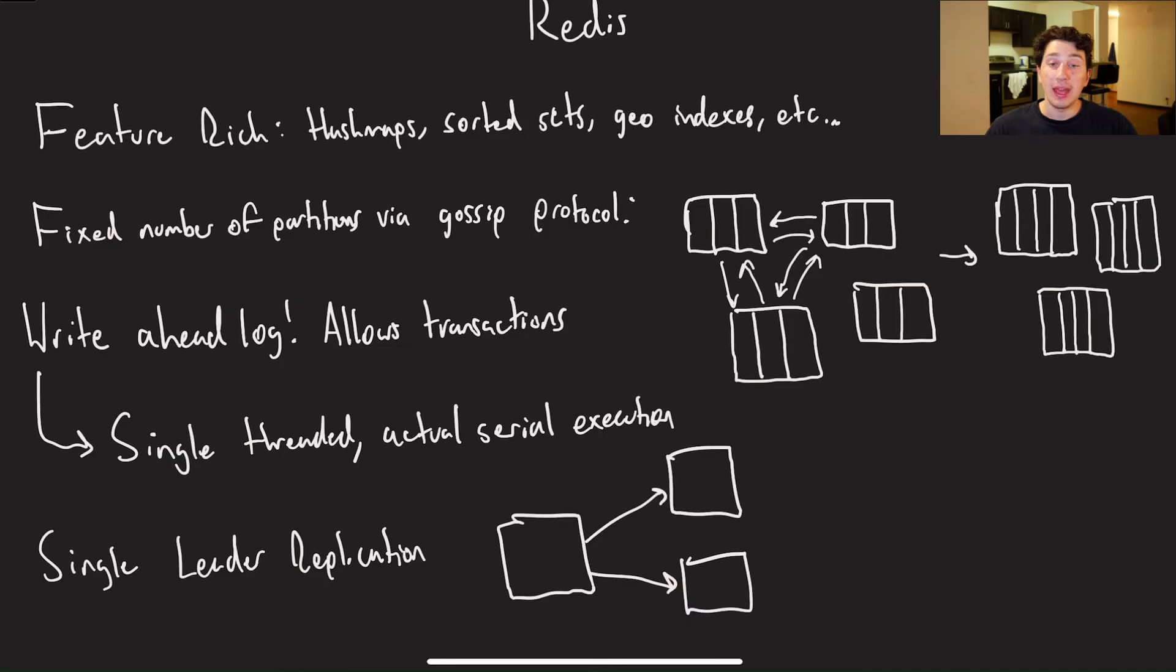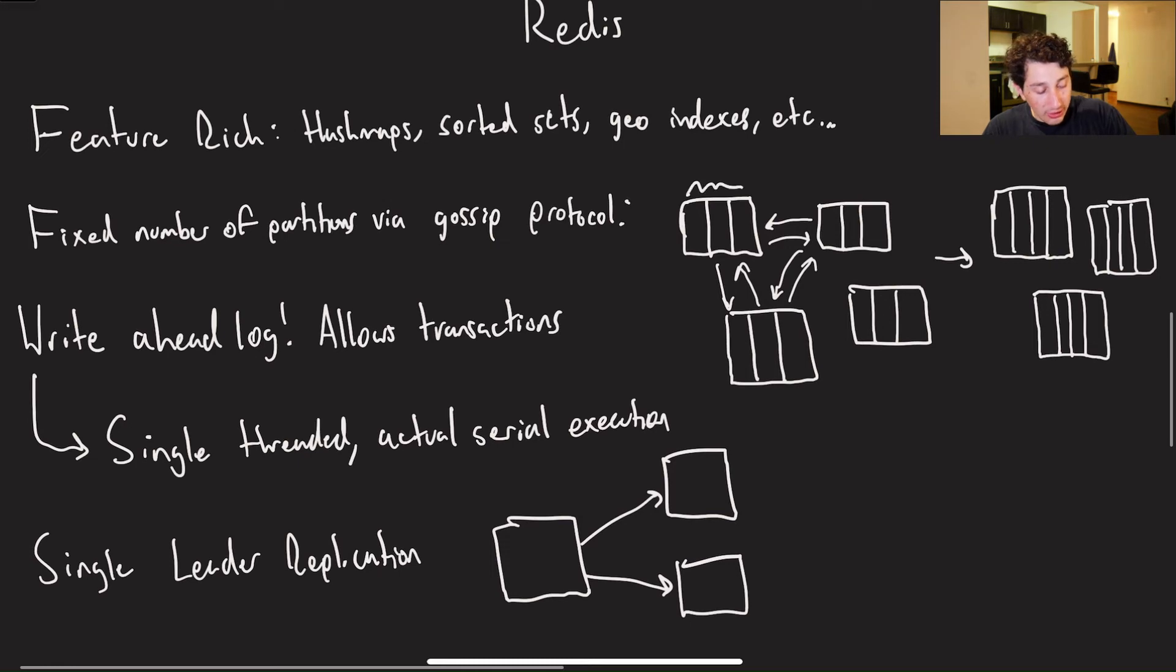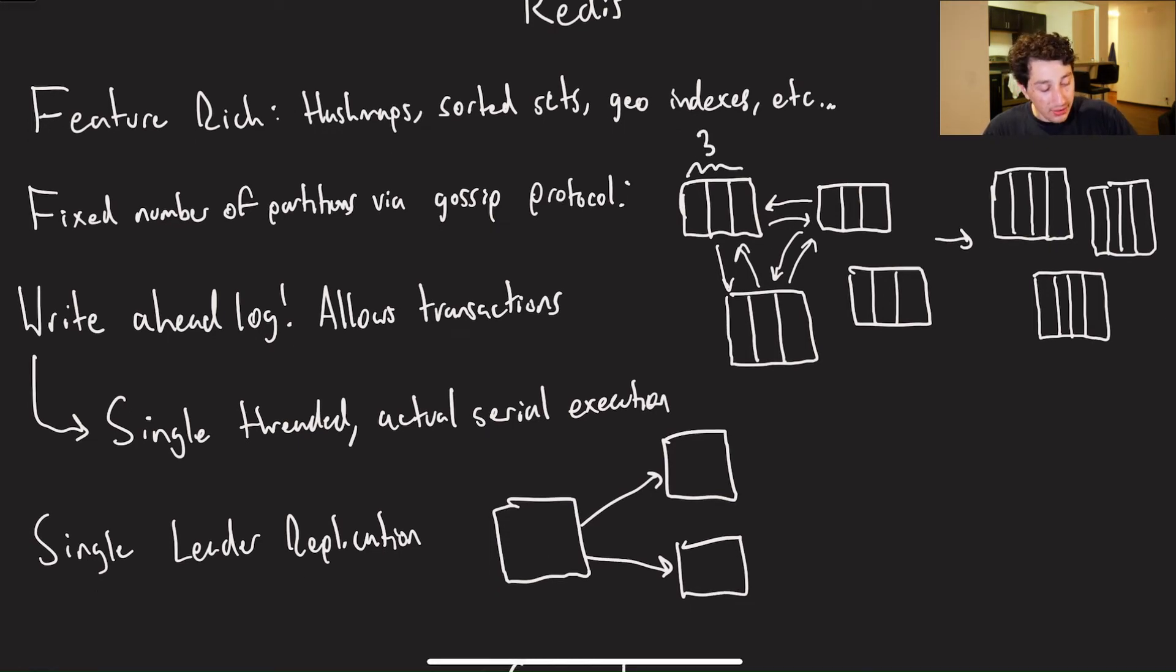So as opposed to Memcached, which just does partitioning via consistent hashing and having a variable number of partitions, in the case of Redis, we actually have a fixed number of partitions, and which partition goes where is basically communicated via a gossip protocol. So let's imagine every single one of these guys has three partitions on it, so there are 12 fixed partitions in the system. If this guy were to go down, then you'll see that we're going to move one of its partitions to every single one of the nodes. And we can do that because basically these guys are going to say, oh, is this thing down? I think so. Is this thing down? I think so. And then once they all agree, then partitions start getting moved around.